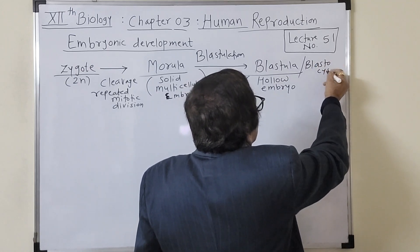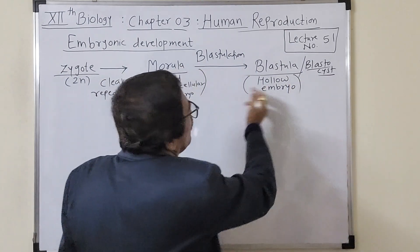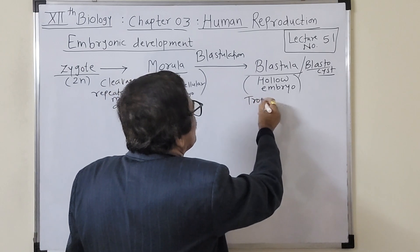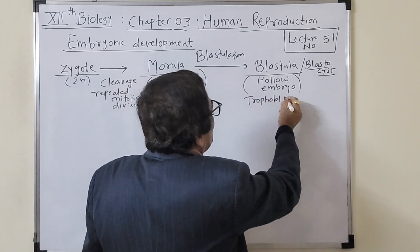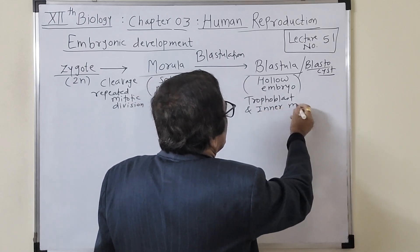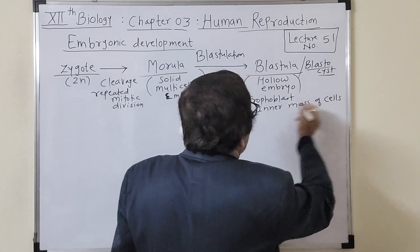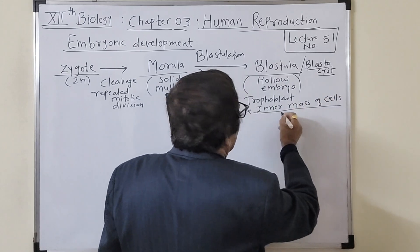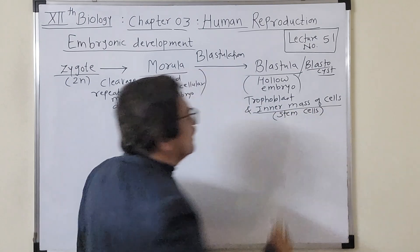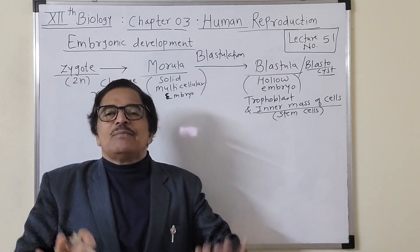The hollow blastula has an outer nourishing layer known as the trophoblast, and an inner mass of cells. This inner mass of cells contains highly potent stem cells that have the ability to give rise to any desired part of the body.